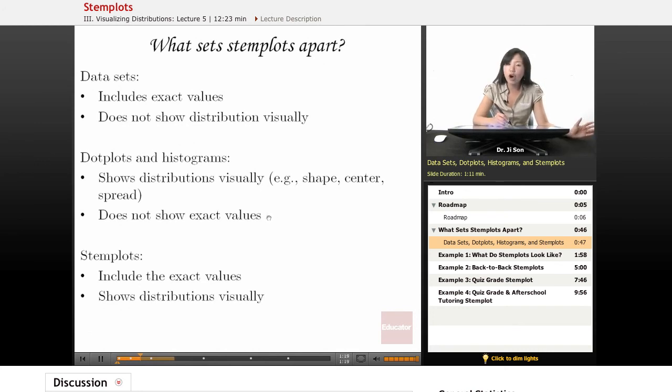But unfortunately, they don't always show the exact values. Sometimes dot plots do, but only if you have a very small number, small range. Stem plots are a way of grouping values, yet it includes the exact values. So it's sort of nice. It's like between the dot plot and the histogram. You could group them together, bin them together, but you could still see the exact values. And it shows you the distributions visually.